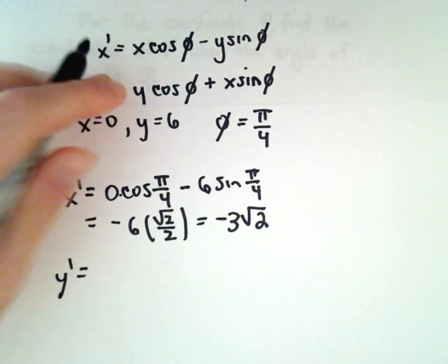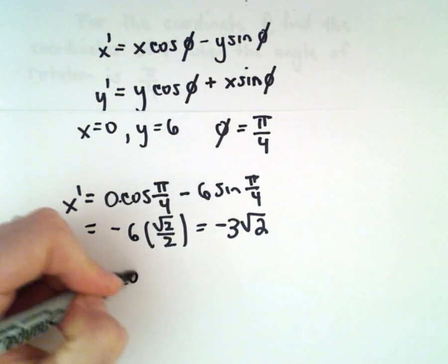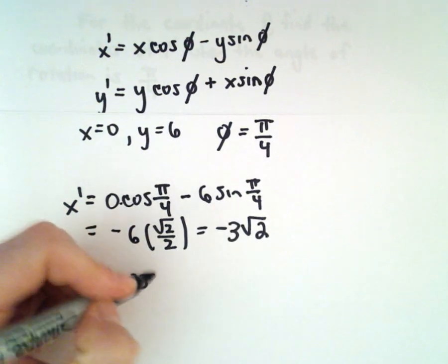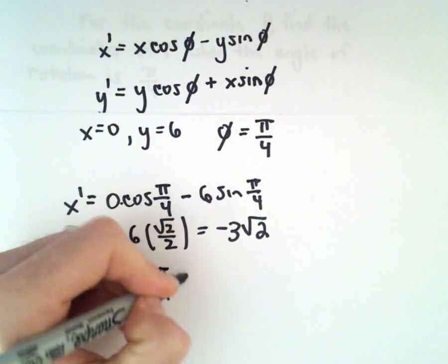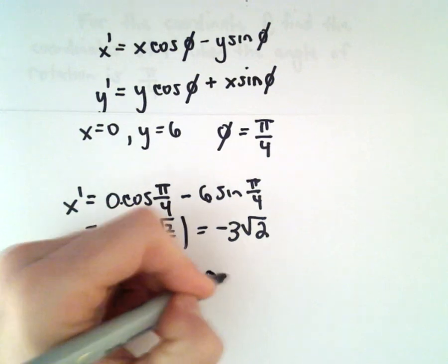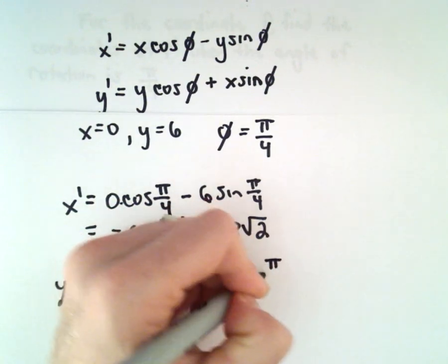Y' will be the y-coordinate, which is 6 times cosine of pi over 4, plus the x-coordinate, which is 0 multiplied by sine of pi over 4.